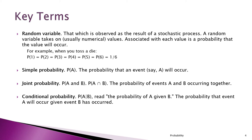A simple probability, also called a marginal probability, is the probability of one event occurring. A joint probability is the probability of two events occurring together in time or space. A conditional probability is the probability of an event given some information about another event having occurred — for example, the probability of A given that we know B has occurred.